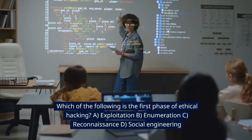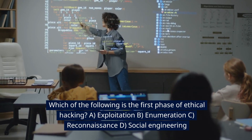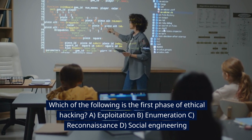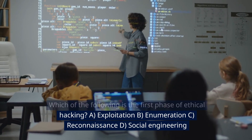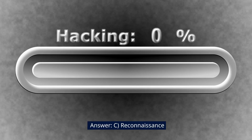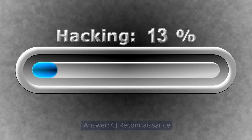Which of the following is the first phase of ethical hacking? A. Exploitation. B. Enumeration. C. Reconnaissance. D. Social Engineering. Answer: C. Reconnaissance.